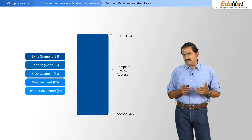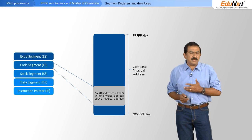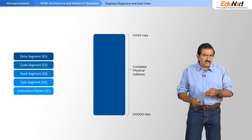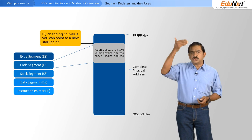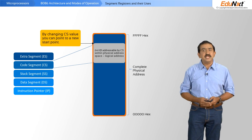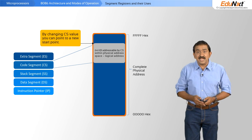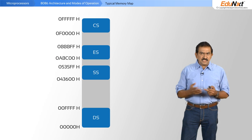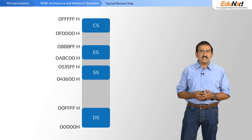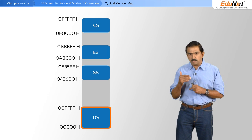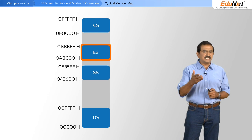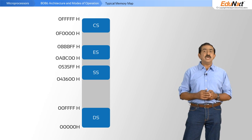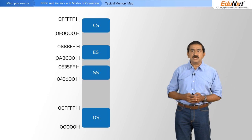The code segment register points to the code within the whole memory space. By simply changing the value in the code segment register you could switch anywhere within the complete 1 megabyte of memory and execute different kinds of code at will. There are four different segment registers shown in this map: the data segment register, the code segment register, the extra segment, and the stack segment register. As the designer or programmer, you are free to map these anywhere within that 1 megabyte space.